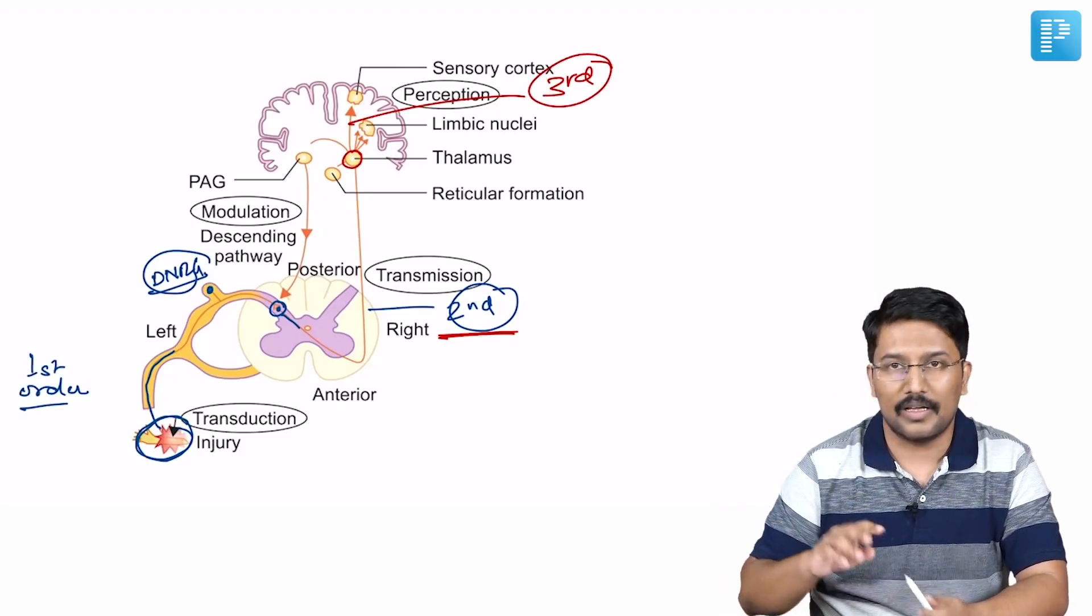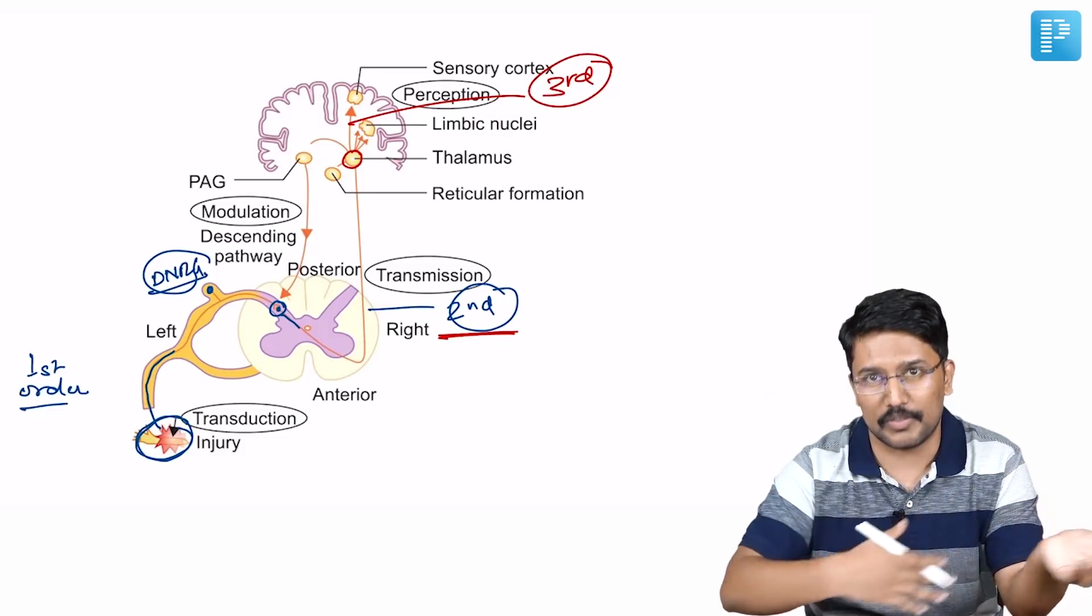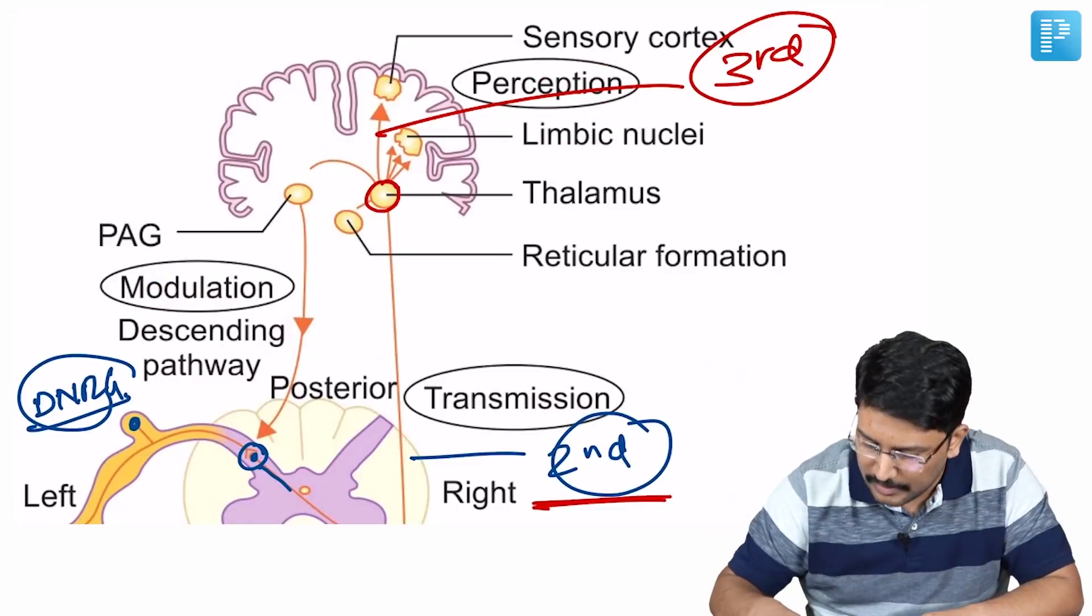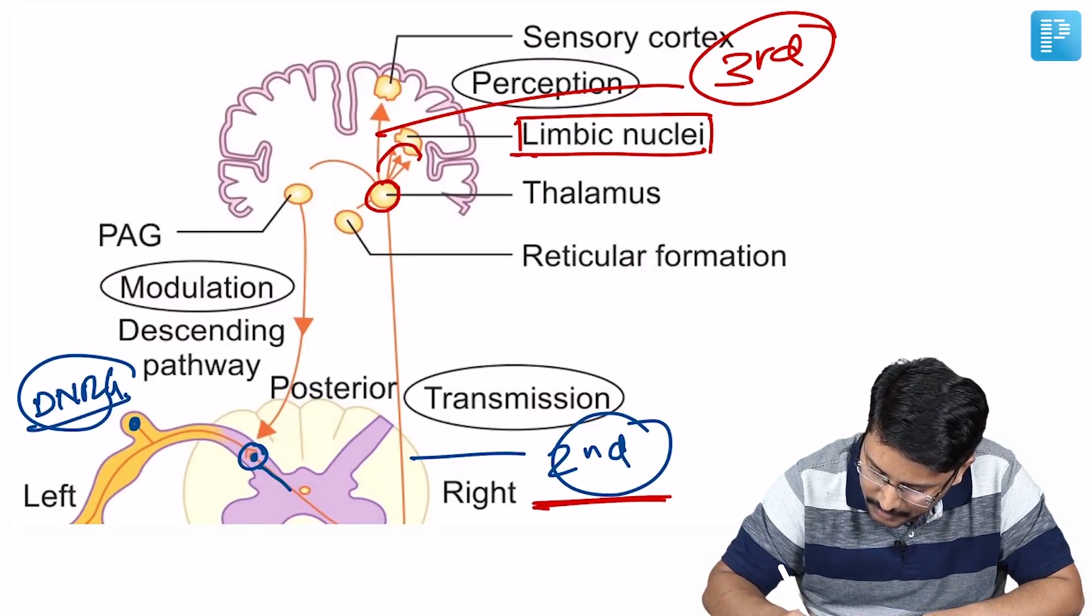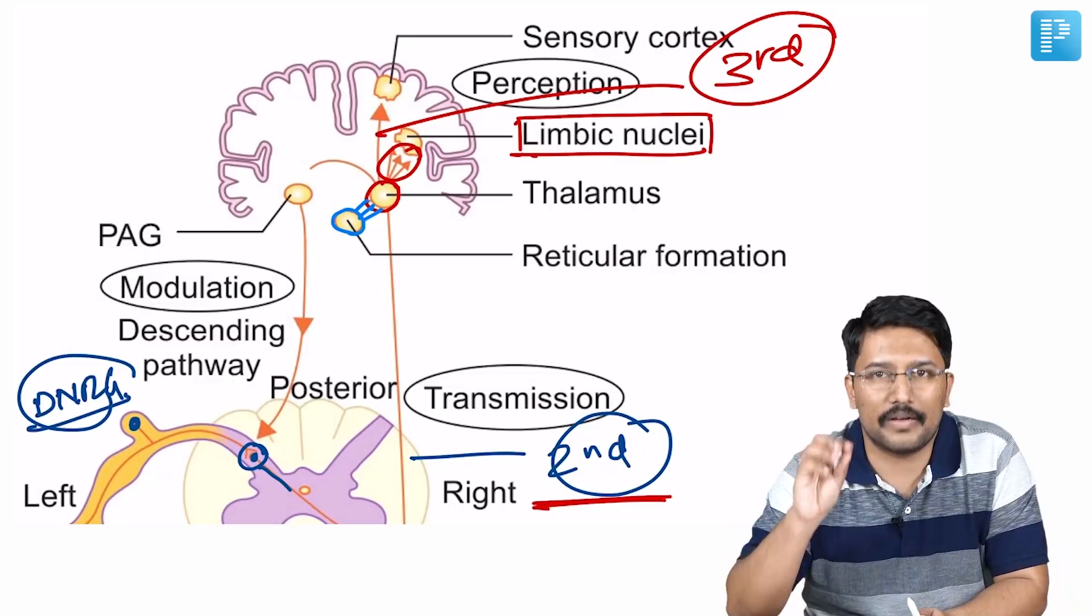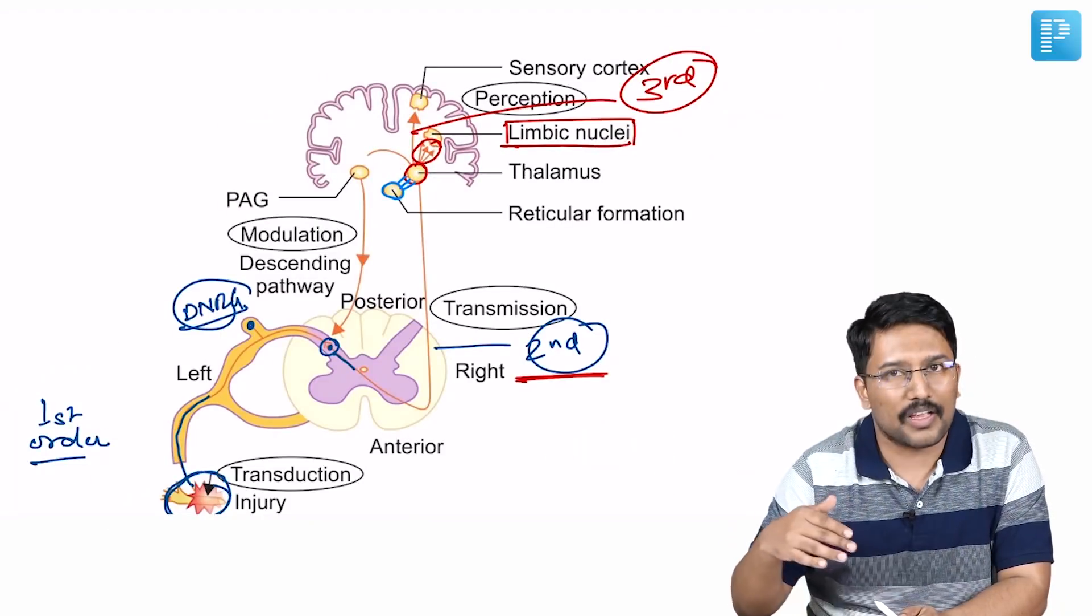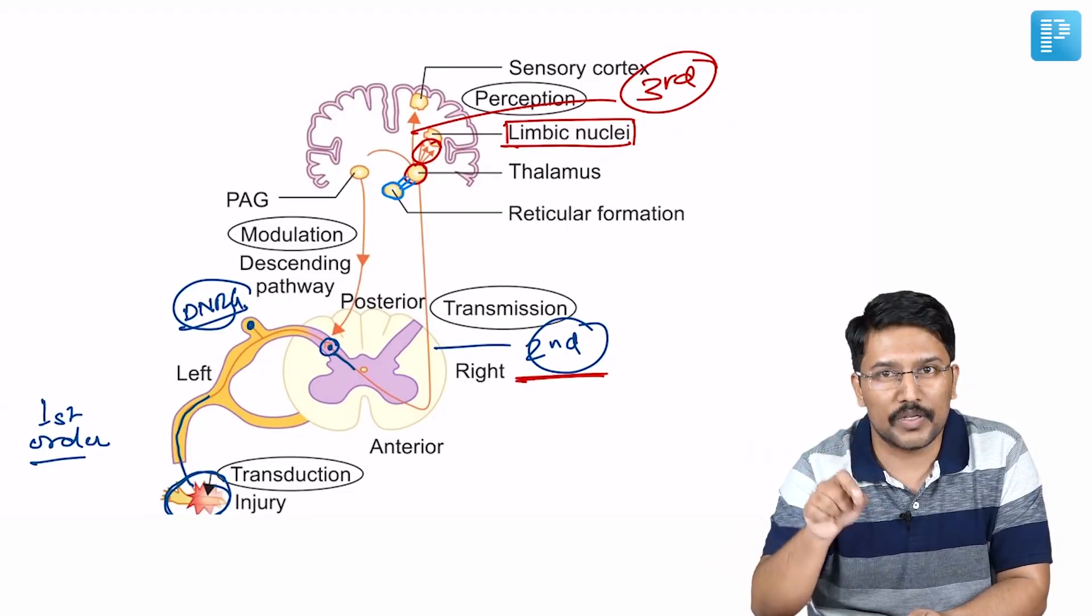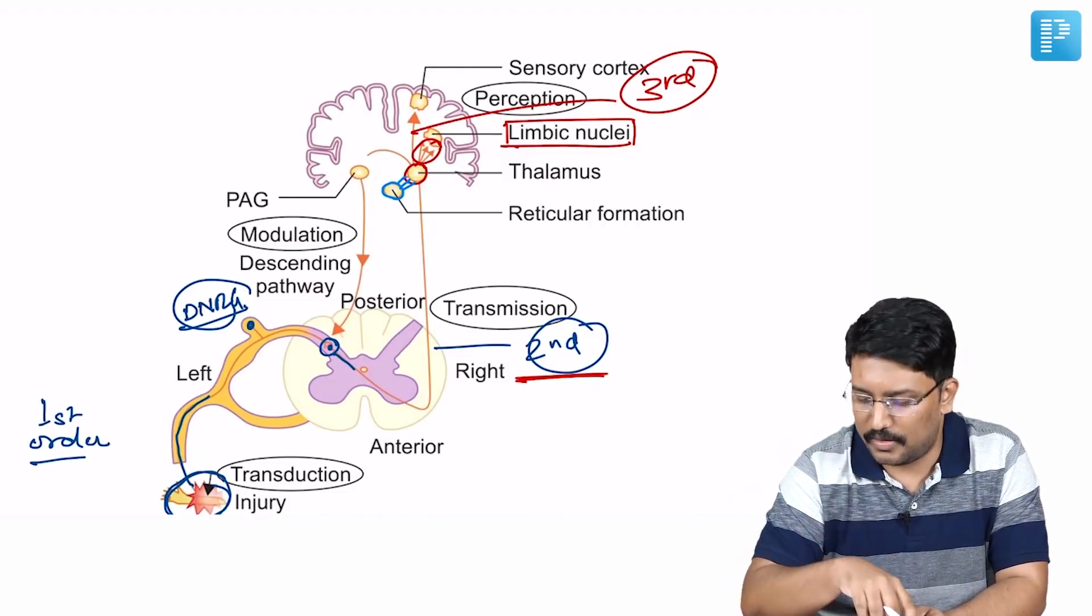From the thalamus, the third order neurons begin and are projected to the sensory cortex. There is a sensory and motor homunculus, and they're projected onto the concerned homunculus where we perceive the sensation of pain. But if you look at this image carefully, you'll see that limbic system or limbic nuclei is getting projection fibers from the thalamus. The significance is that the definition of pain itself talks about an emotional experience - that emotional component to pain stems from the limbic nuclei.